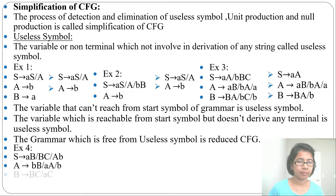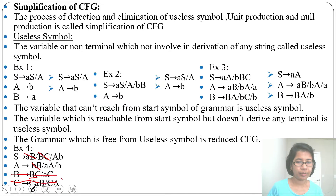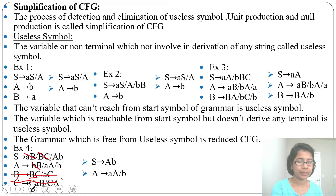The grammar which is free from useless symbols is called a reduced context-free grammar. Another example: from B and C you cannot derive any terminal. From B you derive 'BC', from C you derive 'Cab' or 'Ca' — no terminal is ever reached, so they will not terminate. We delete B and C productions, and wherever B and C appear, we remove them. The reduced CFG becomes: S tends to 'aB' (removing 'bC'), A tends to 'aA' or 'b'.